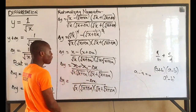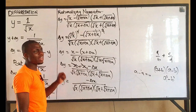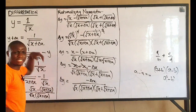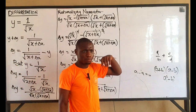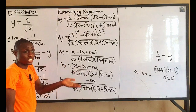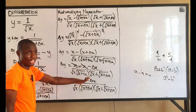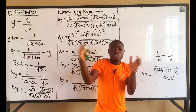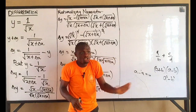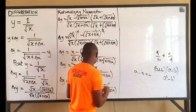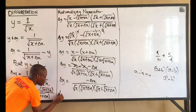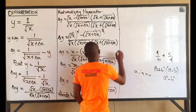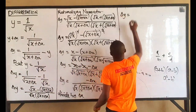At this point, the next step is to divide through by change in x. After taking y to the other side and simplifying, the next step is always to divide through by Δx. So I'll divide both sides by change in x.